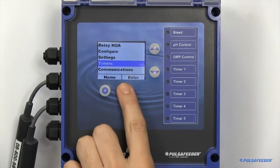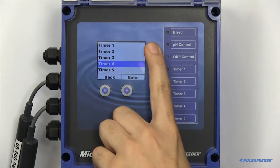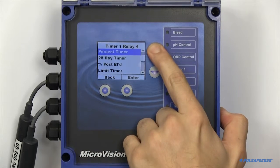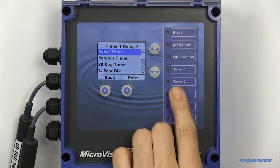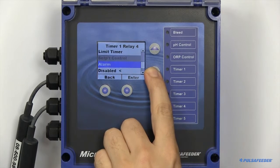The timers page is where you will set up your remaining relays. The relays can be configured as pulse timers, percent timers, 28 day timers or biocides, percent post bleed, limit timer, or alarms.